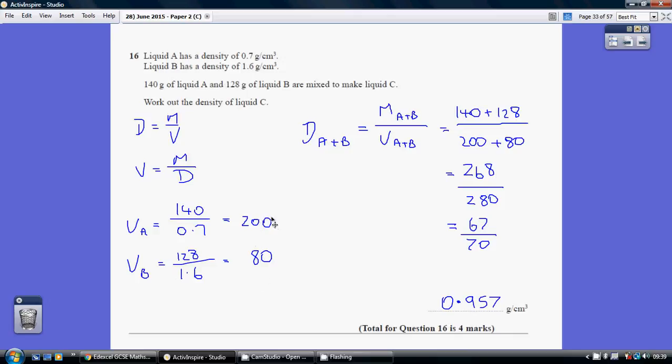So now looking for the density of the whole liquid C is when we've mixed them together. So the density of A and B together equals the mass of A and B together divided by the volume of A and B together.